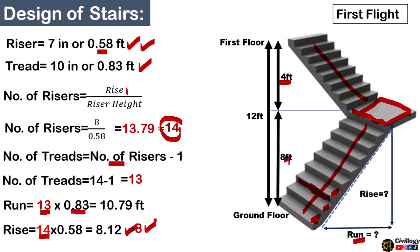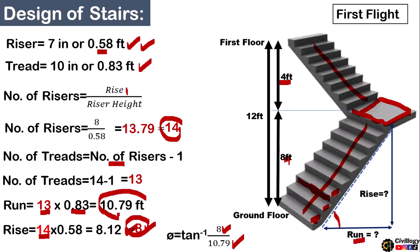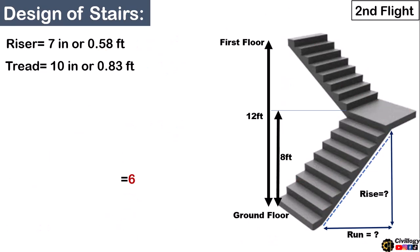To check the slope, we use the formula: angle = arctan(rise / run) = arctan(8 / 10.79) = 37 degrees. Since the general guidelines state the angle should be between 25 and 40 degrees, the chosen riser and tread values are well within standard specifications — you can proceed with this design.